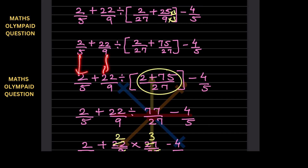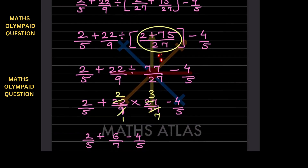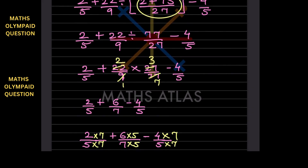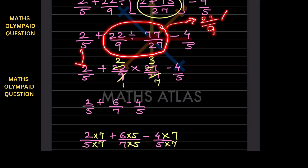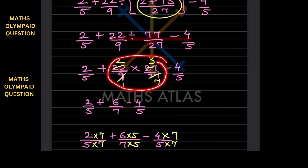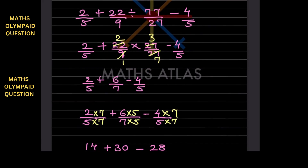The square bracket becomes 2/27 plus 75/27. Adding these: 2 plus 75 is 77, so the square bracket equals 77/27. The bracket is now resolved since it is a single number. Next, we have 22/9 divided by 77/27. We convert division to multiplication by flipping 77/27 to get 27/77. So it becomes 22/9 times 27/77. Simplifying: 27 divided by 9 is 3, and 22 and 77 both divide by 11 giving 2 and 7.